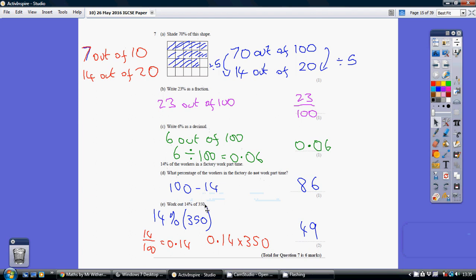Now part E, work out 14% of 350. Well, you can use the percentage button on your calculator. So you can pop in 14% open bracket 350 close bracket equals, gives you 49. Or just do it from first principles, work out a multiplier.